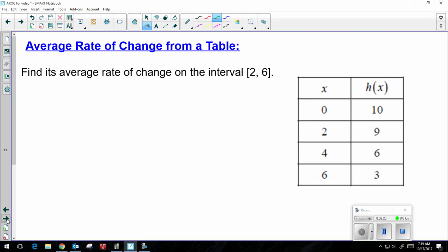Average rate of change from a table. Find its average rate of change on the interval 2 to 6. So once again, those are my x values, 2 and 6. So in my table, when x is 2, y, or h of x in this case, is 9. Because remember, this is my x and that's my y. And then I have 6, 3.